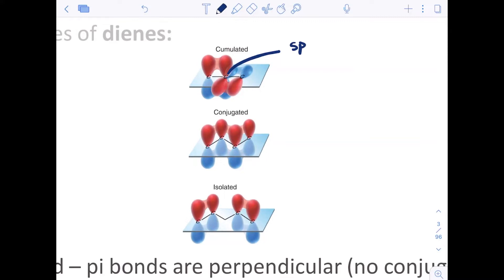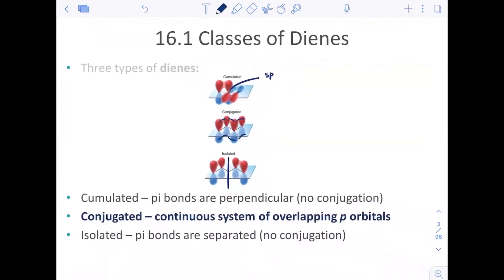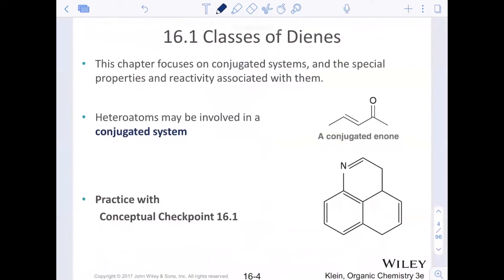Conjugated, they are able to resonate. Notice how this overlapping system of p orbitals is allowing for every p orbital to overlap together. They're all parallel and they're all lined up. Isolated pi bonds are separate. There's no conjugation. There's no resonance because there's this brick wall right here of the sp3 hybridized center. Now this chapter is going to again focus on conjugated systems and the special properties that they have with them.